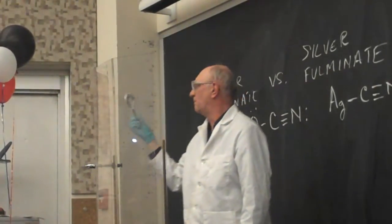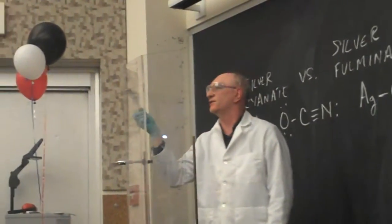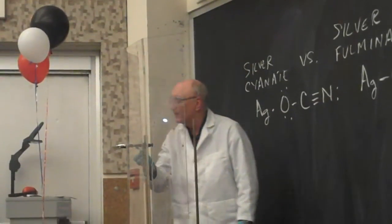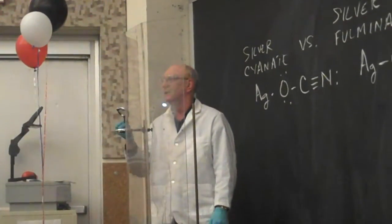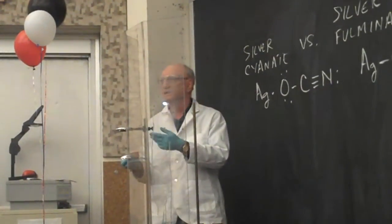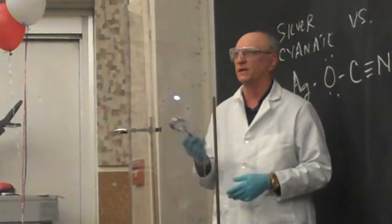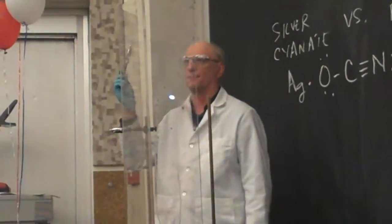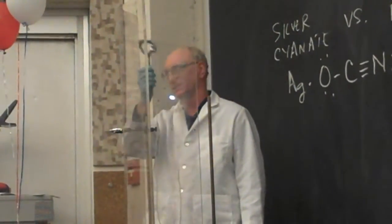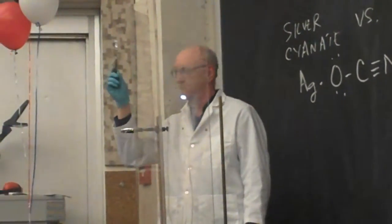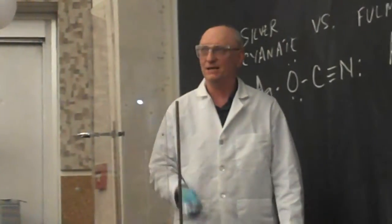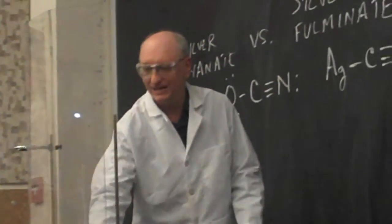Basically, they saw different types of properties between the two. So it was not until 1830 when Berzelius coined the term isomerism. This is an example of that. That's my demonstration for today. Thank you.